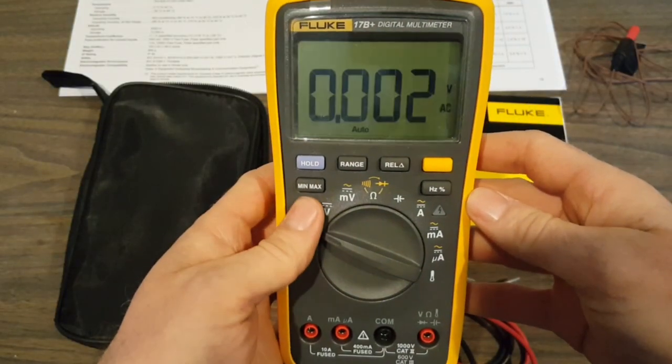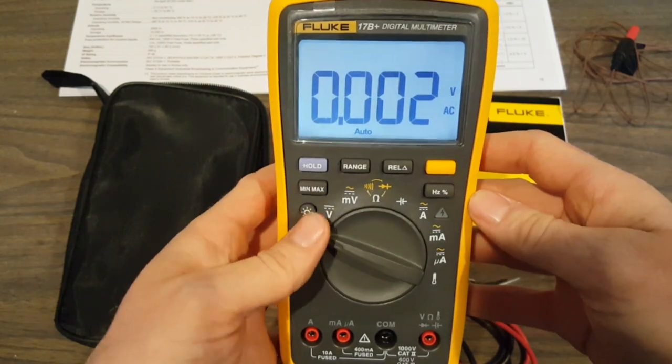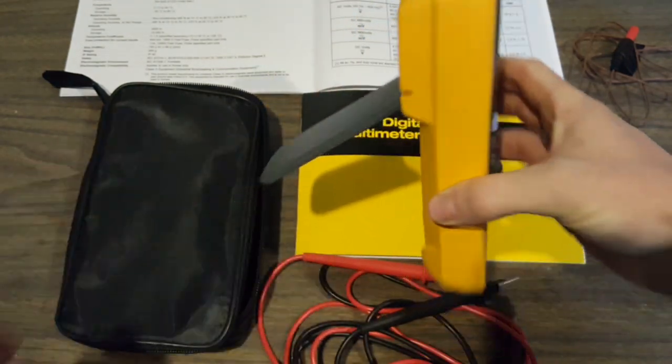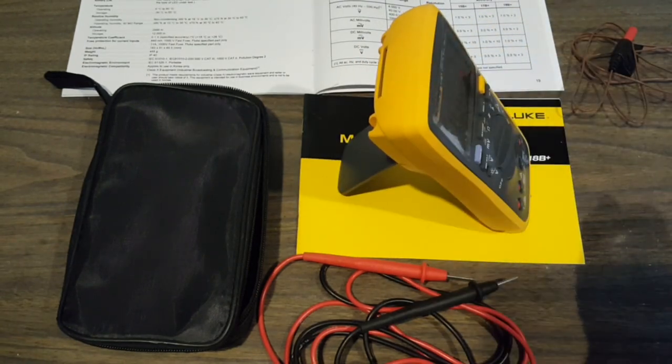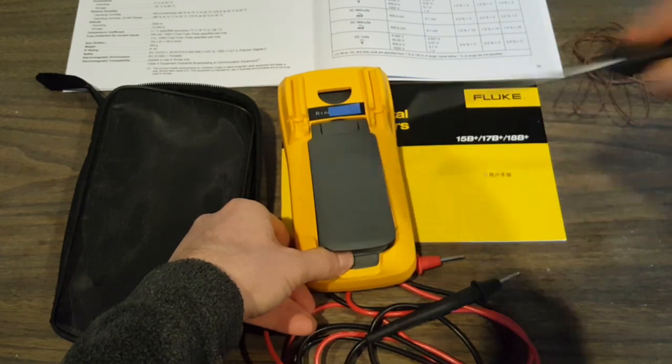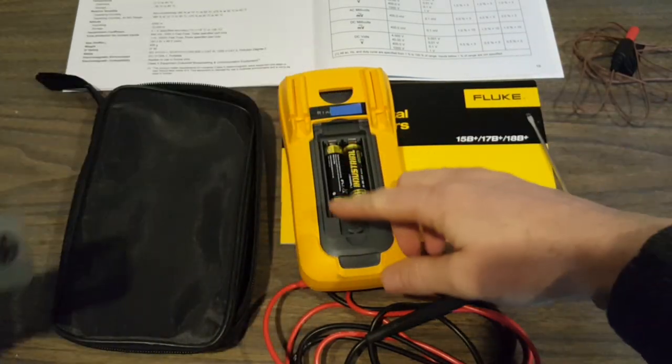How about ease of use? Well, the controls are easy to use. The range switch is tight, and it works smoothly. The backlight is bright. The fold-out bale holds the unit upright, and it's easy to open and close.